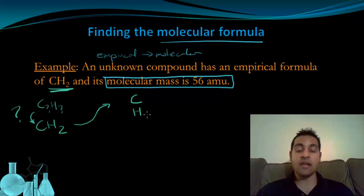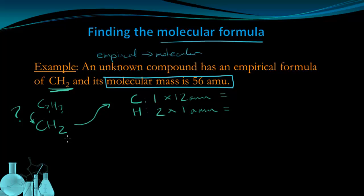I'm going to find the formula mass of the empirical formula. C and H—carbon and hydrogen. I have one carbon, I have two hydrogens. Carbon is 12 AMUs and hydrogen is 1 AMU. That's going to give me a formula mass, or the empirical formula mass for this, 12 plus 2, or 14 AMUs.